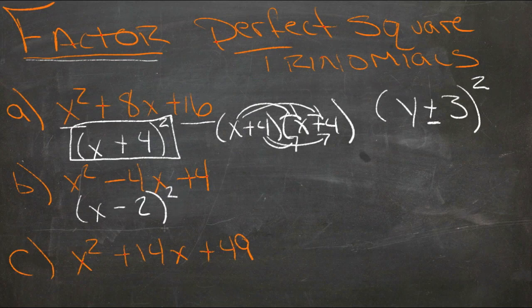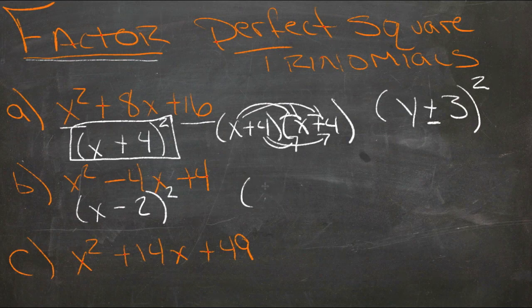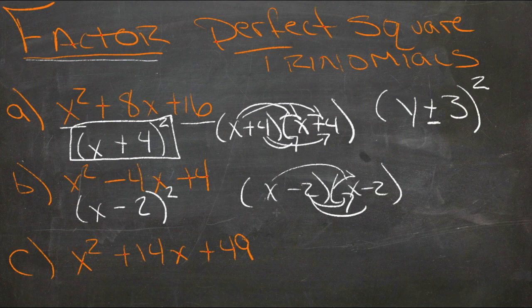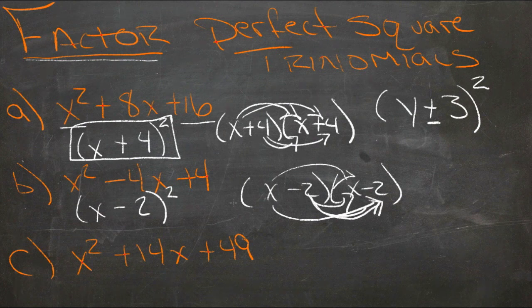And we can test that real quick. (x - 2) times (x - 2), well that'd be x² minus 2x minus another 2x. There's minus 4x. And then negative 2 times negative 2 is our positive 4. So yep, that one works too.